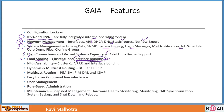It supports load sharing - Cluster XL and interface bonding, which we'll cover in upcoming videos, where you can group two interfaces to increase your bandwidth. There is also high availability support with Cluster XL and VRRP. It also supports routing protocols: BGP, OSPF, RIP, static routing, as well as multicast routing protocols.